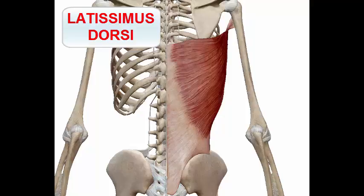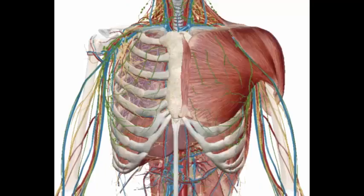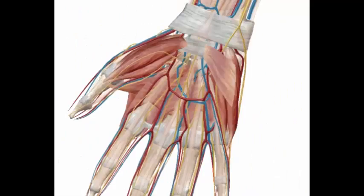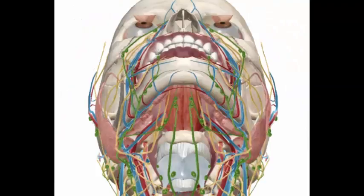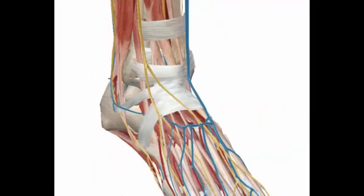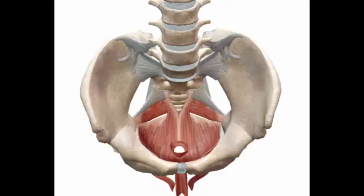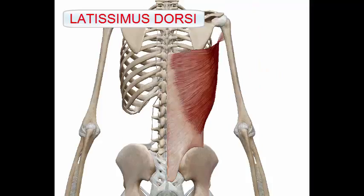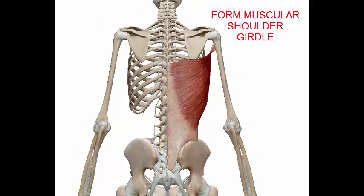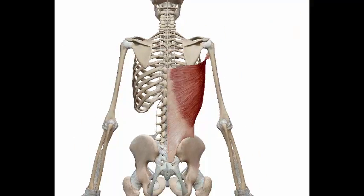Hi, I'm Atta from Easy Anatomy. In this video we are going to talk about the latissimus dorsi. The latissimus dorsi is one of the posterior shoulder joint muscles that form the muscular system of the shoulder girdle.